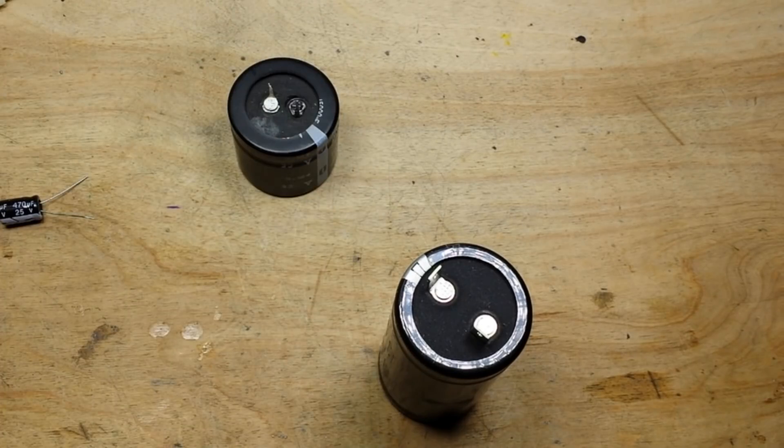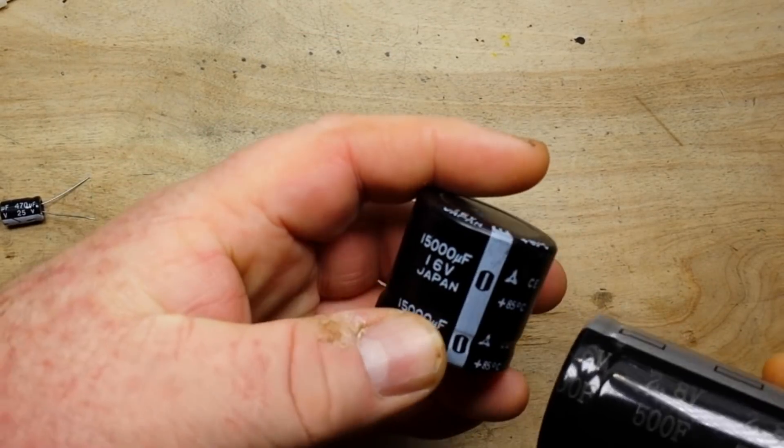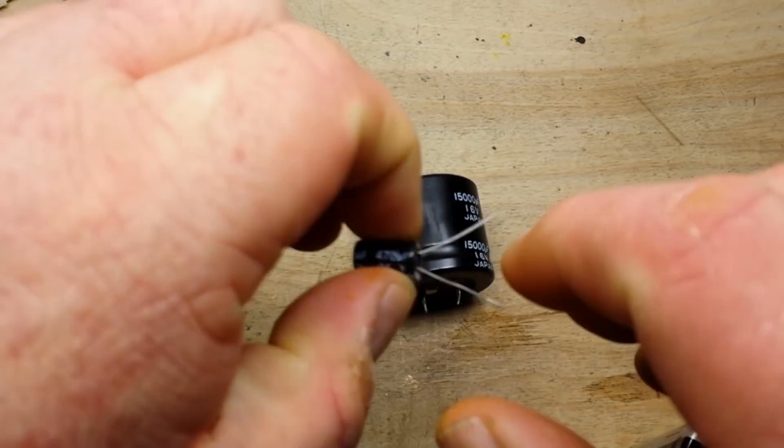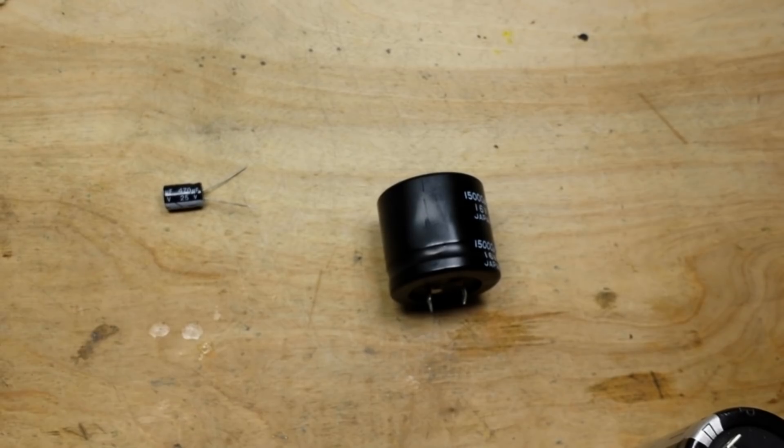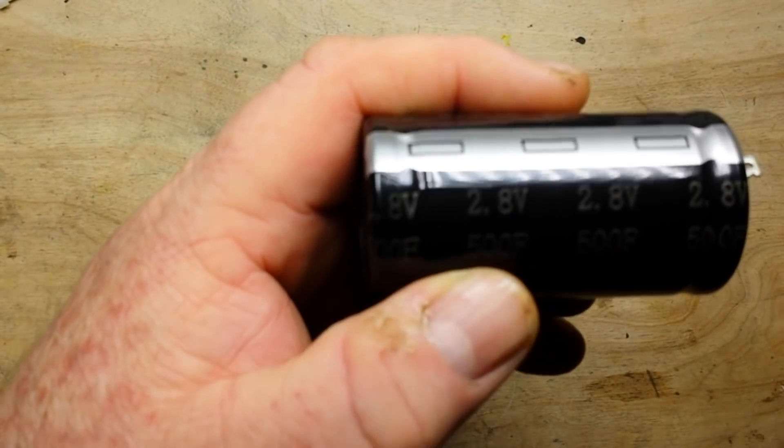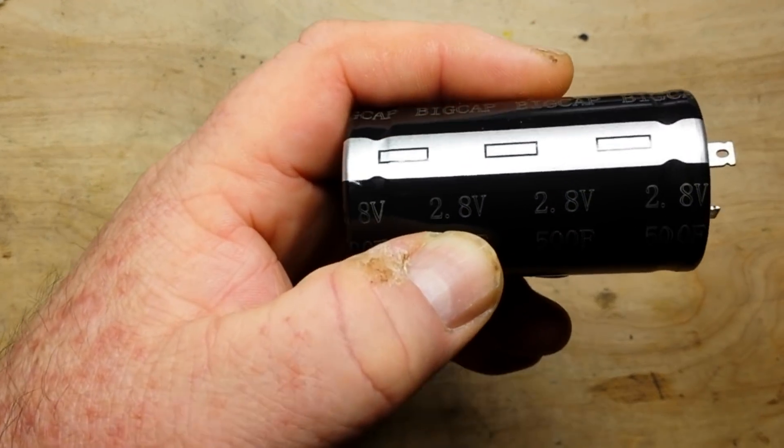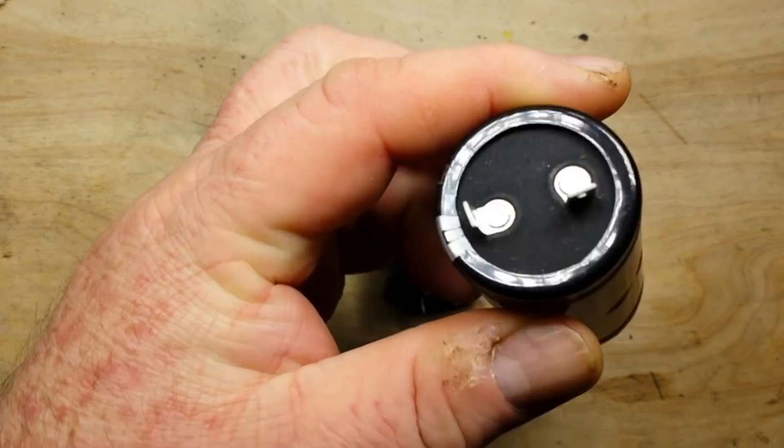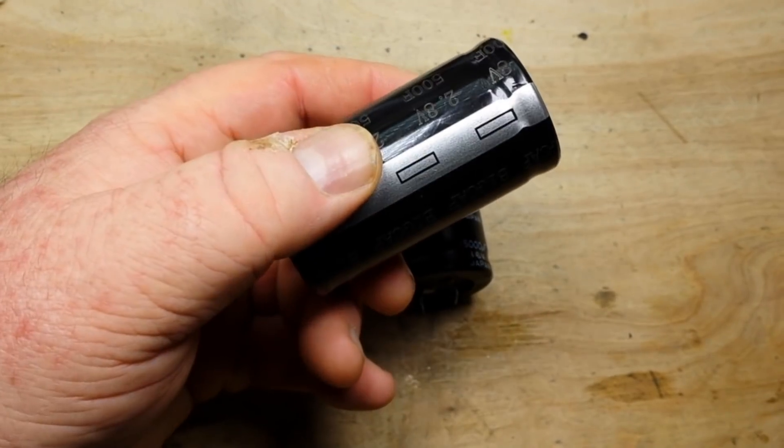Now another difference you're going to find is in the amount of voltage it can take. For instance this is a 16 volt capacitor, this is a 25 volt capacitor, and they go much higher, I mean clear into the hundreds of volts. But electrolytic supercapacitors you're going to find top out - the most I've ever seen is 5 volts, and this is 2.7, 2.8. 2.7, 2.8 seems to be pretty standard.